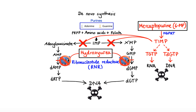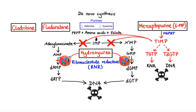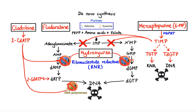Ribonucleotide reductase is also a major target of other purine anti-metabolites, such as cladribine and fludarabine. Cladribine is activated mostly in lymphocytes, when it's converted to its toxic metabolite 2-chlorodeoxyadenosine triphosphate (2-CdATP). In proliferating cells, 2-CdATP not only interferes with ribonucleotide reductase, but also acts as a DNA polymerase inhibitor by competing with the binding of dATP to that enzyme. Unlike other anti-metabolite drugs, cladribine also has cytotoxic effects on resting lymphocytes. In resting cells, cladribine causes single-strand DNA breaks, inducing the DNA repair enzyme, which in turn exhausts the intracellular pools of nicotinamide adenine dinucleotide (NAD) and adenosine triphosphate (ATP), thus causing apoptotic cell death.